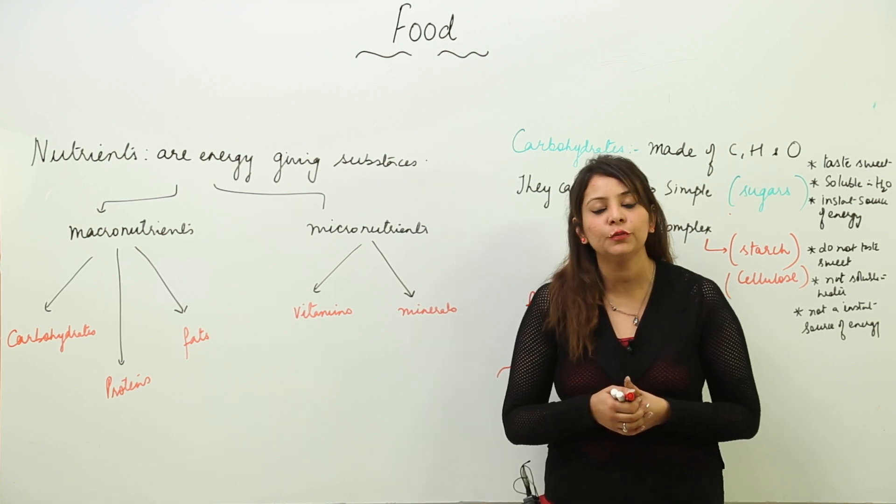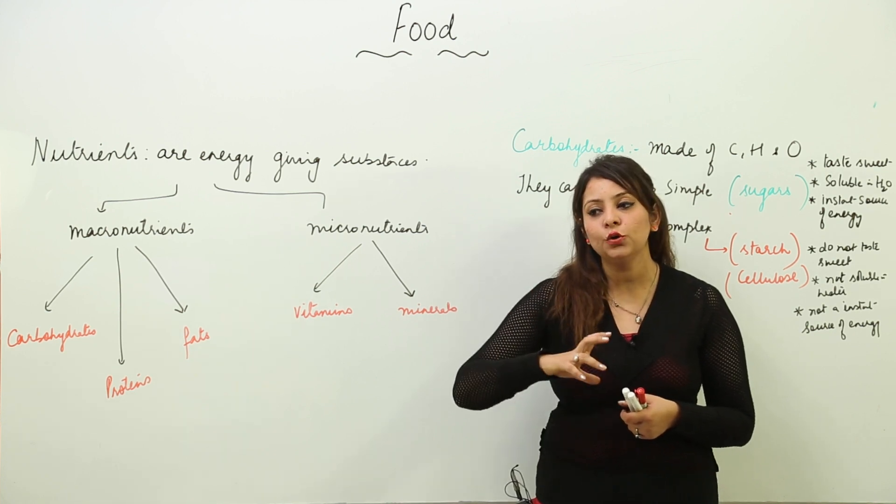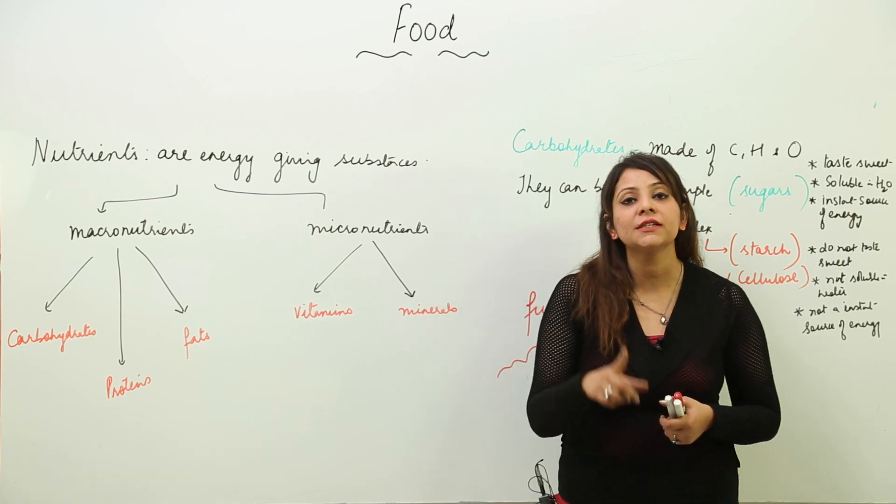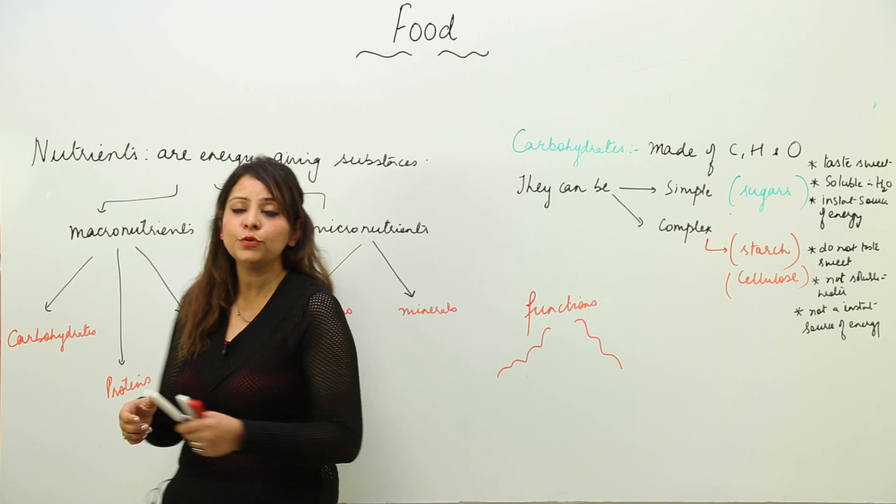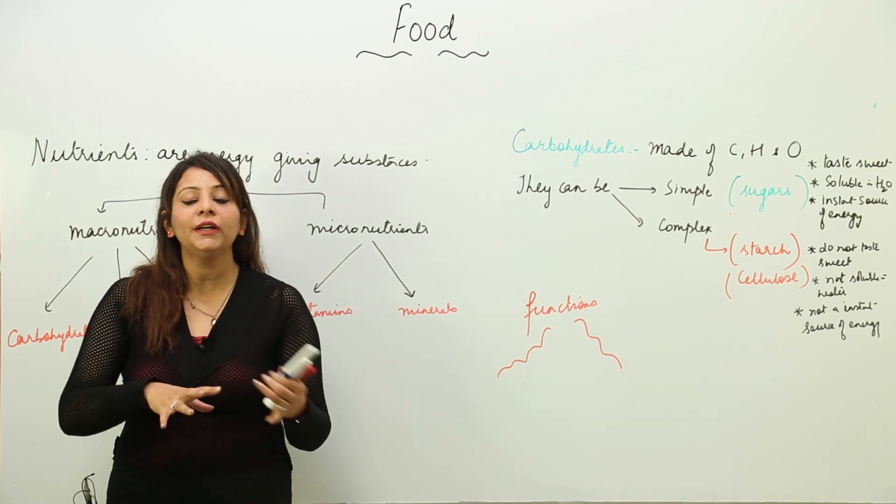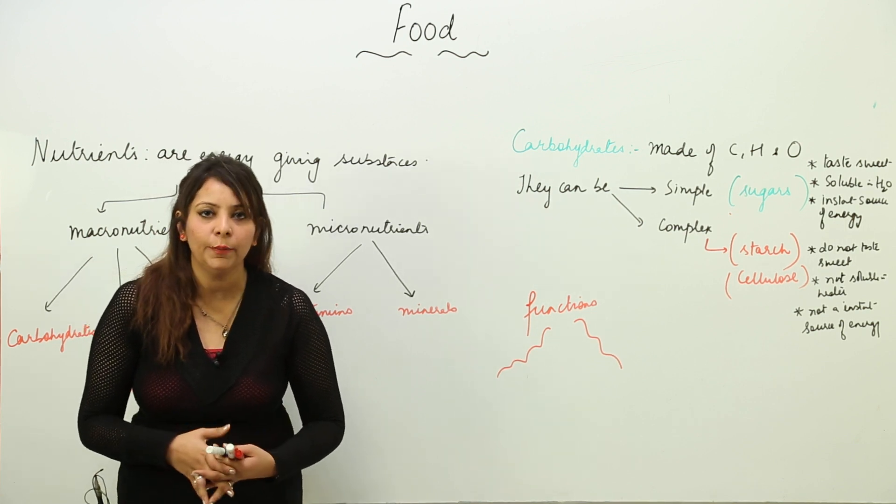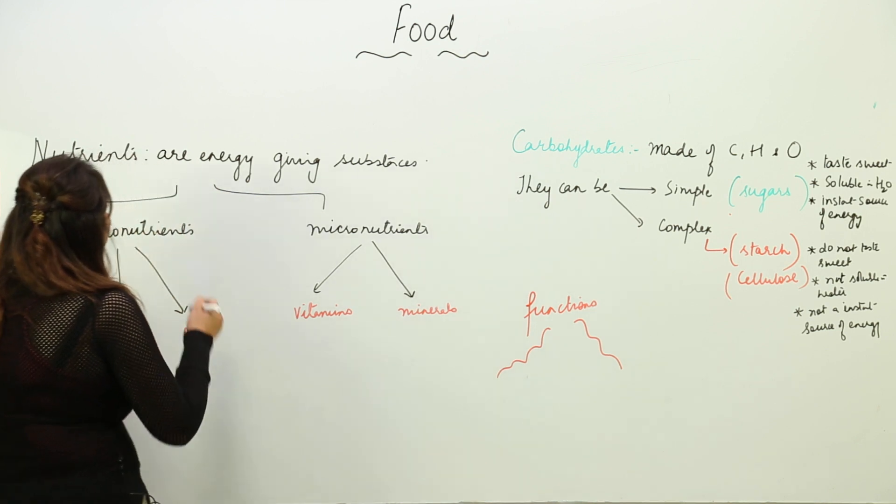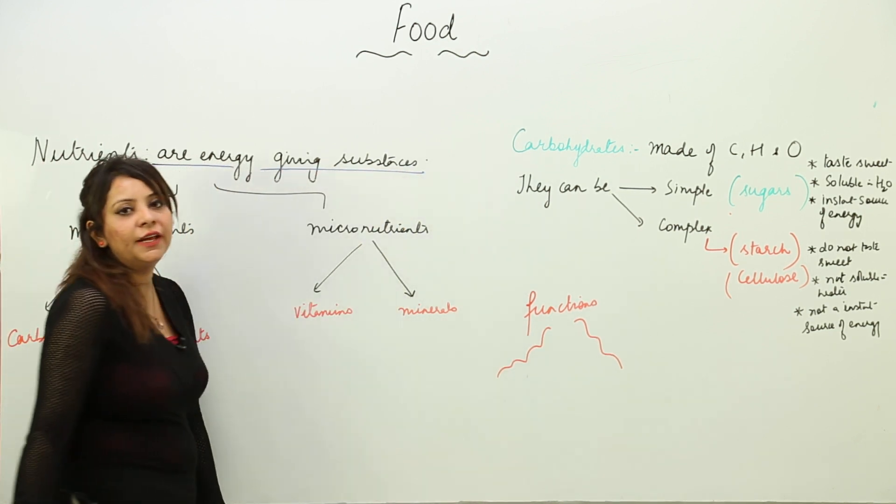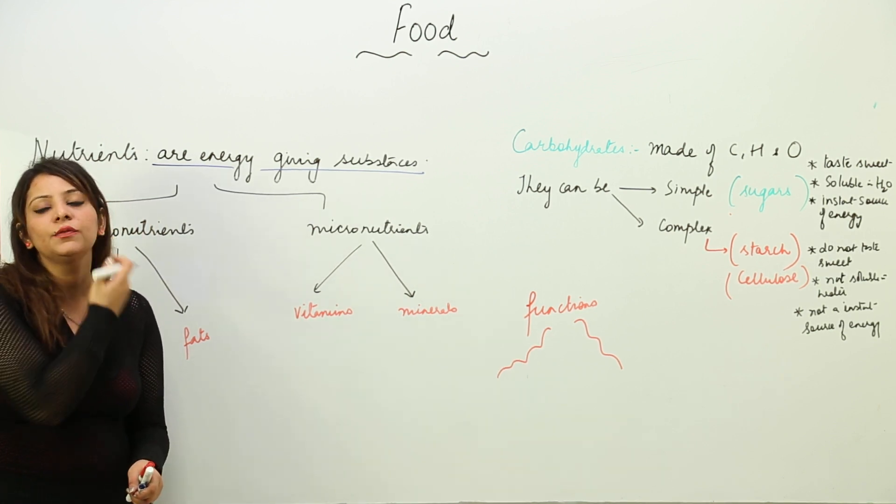The question is: what does food actually contain which makes you survive better or which provides you energy? Food has nutrients. This is what we are going to study in this chapter - what actually are nutrients, what kind of nutrients are there, what are the sources of those nutrients, and what important functions they are performing. Nutrients are energy-giving substances that provide us energy which is required to carry out the metabolic activities of the body.